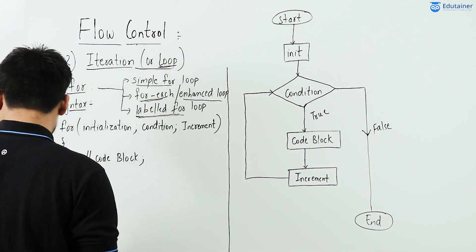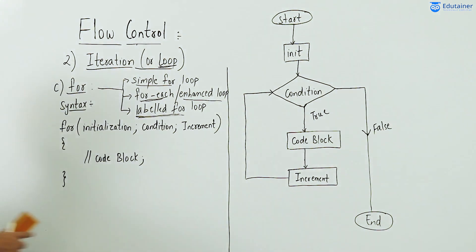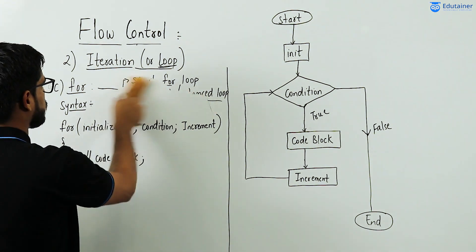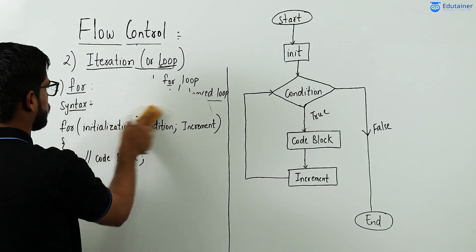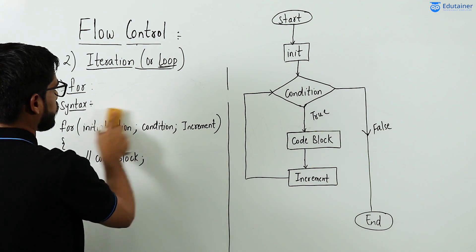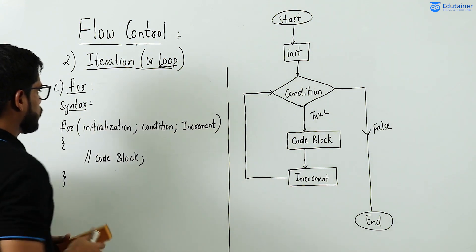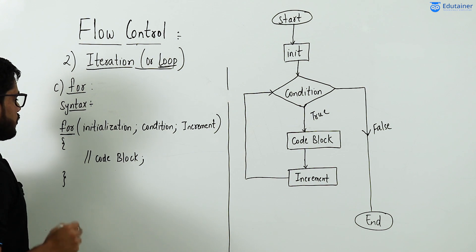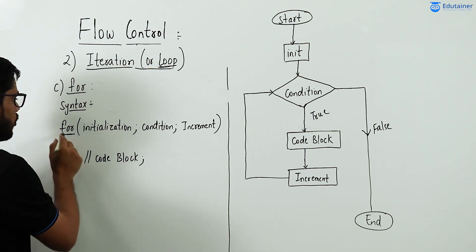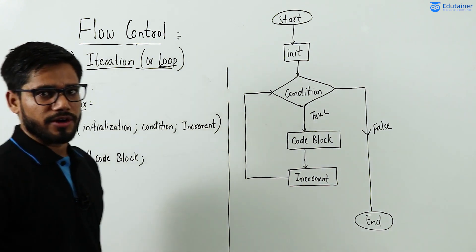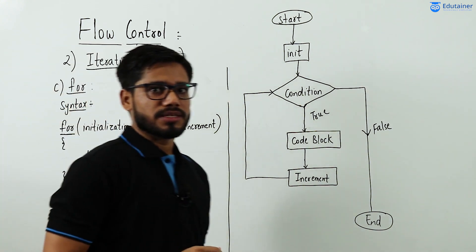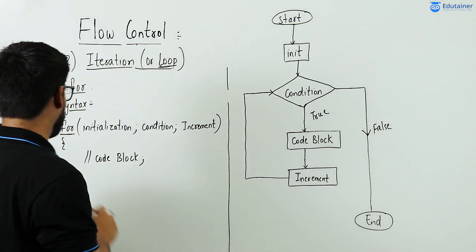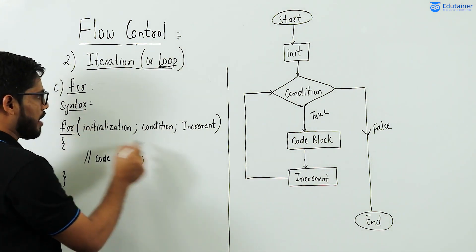But coming to the for loop, all things — increment, decrement, condition, and initialization of variable — are provided together. That's why it is a concise manner to perform any programming iteration. So let's see the syntax first. The syntax starts with the for keyword, which is a reserved keyword, meaning we cannot use it as a variable name.